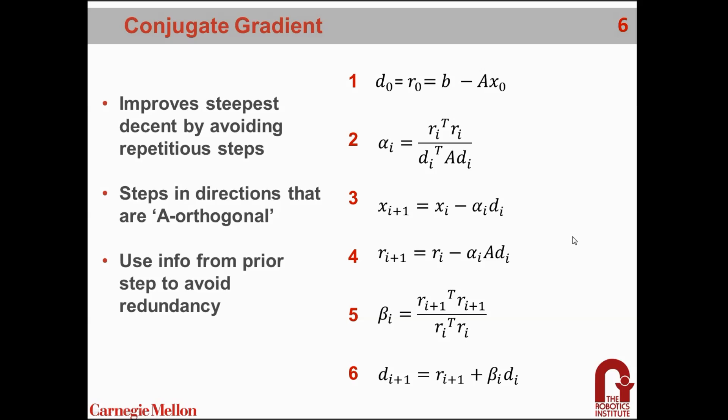You can see they're really not too different from steepest descent. Instead of updating x along the direction of the steepest descent r, it's now along the direction of d, which is constructed to be A-orthogonal from the residuals.